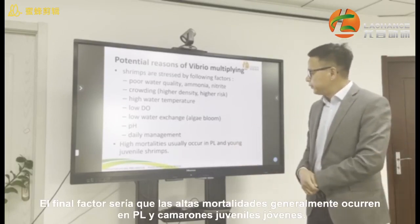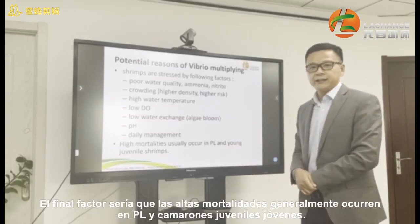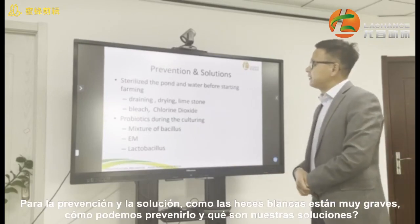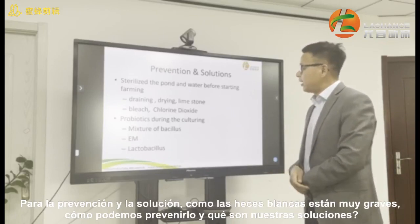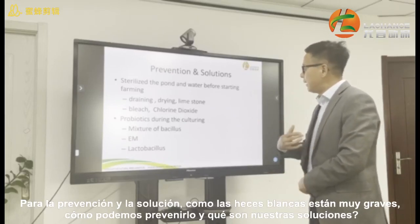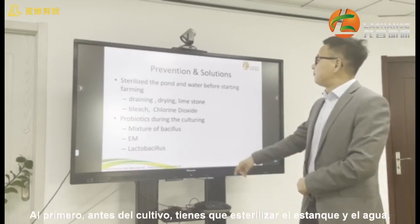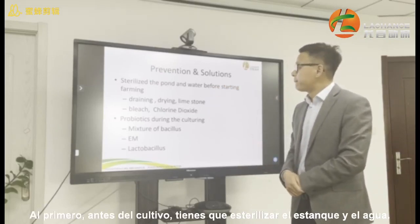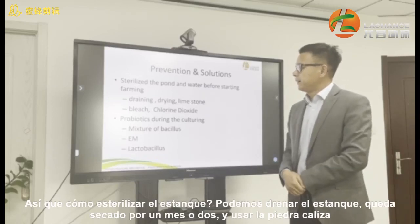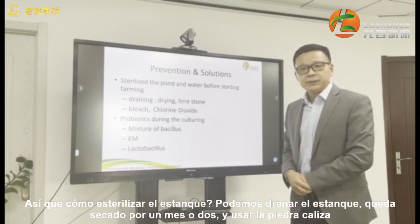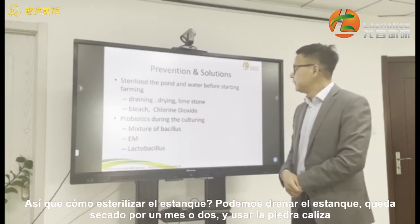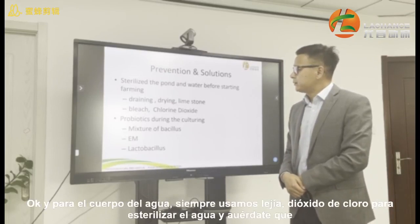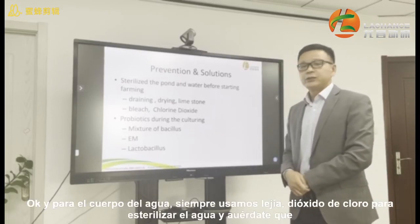High mortality usually occurs in PL and young juvenile shrimp. For prevention and solutions, since white feces disease is so serious, how are we going to prevent it? First, before starting farming, you have to sterilize the pond and the water body. To sterilize the pond: drain it, dry it — maybe one month, depending on your situation — and also use limestone.